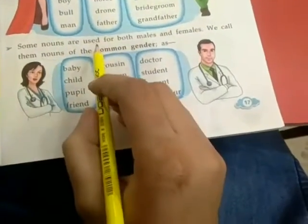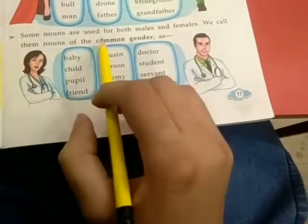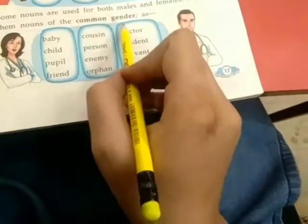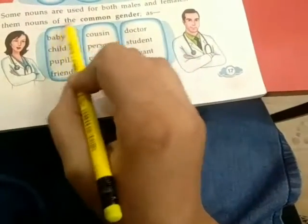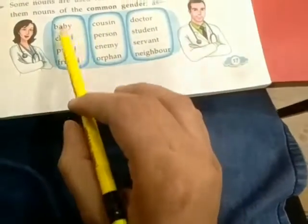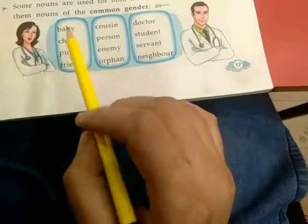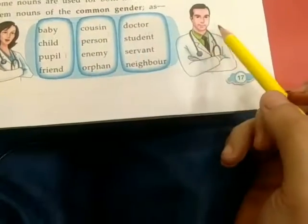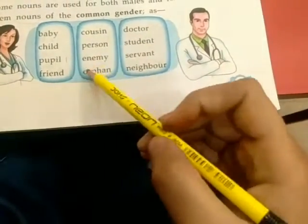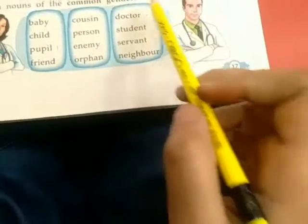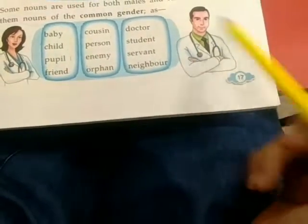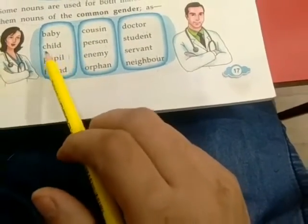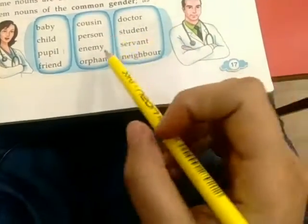Some nouns are used for both males and females — we call them nouns of the common gender. For example: baby, child, pupil, friend, cousin, person. Doctor can be male or female, student can be male or female, baby can be daughter or baby son, child can be girl or boy.